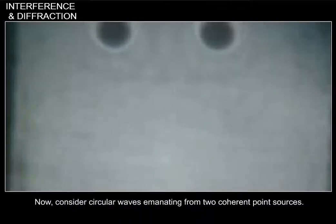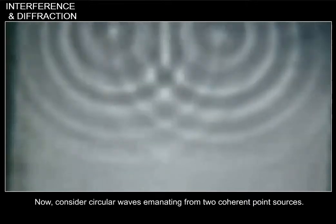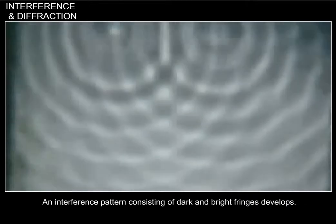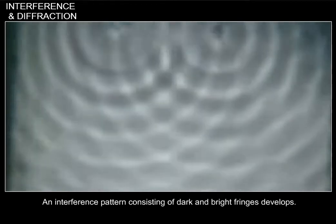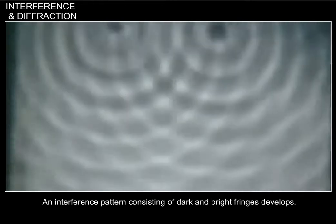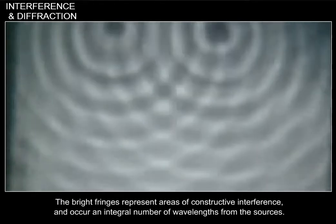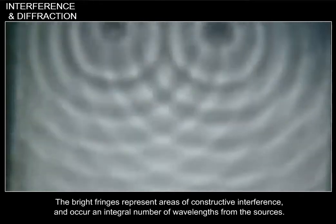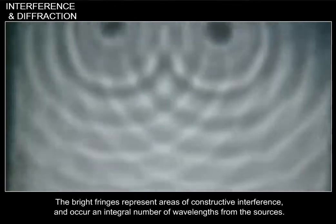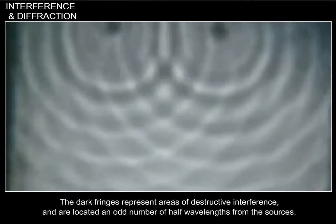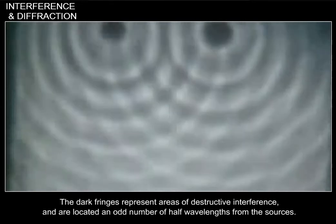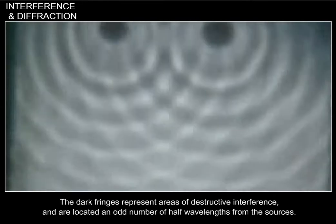Now consider circular waves emanating from two coherent point sources. An interference pattern consisting of dark and bright fringes develops. The bright fringes represent areas of constructive interference and occur an integral number of wavelengths from the sources. The dark fringes represent areas of destructive interference and are located at odd number of half wavelengths from the sources.